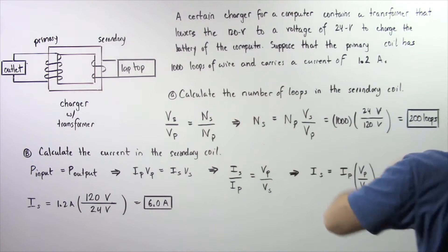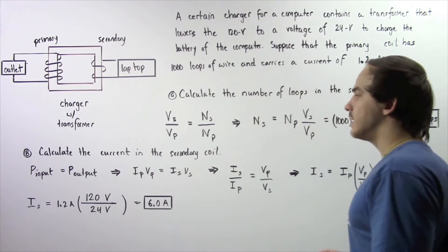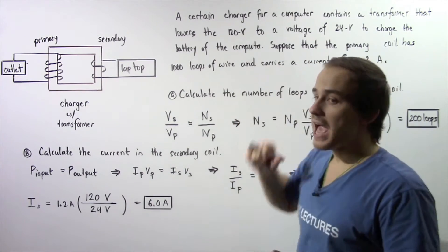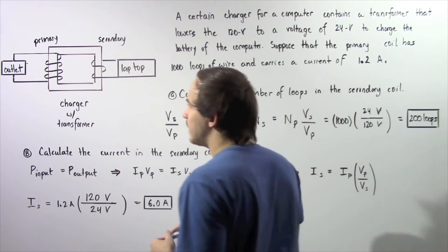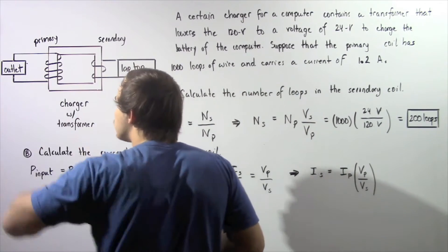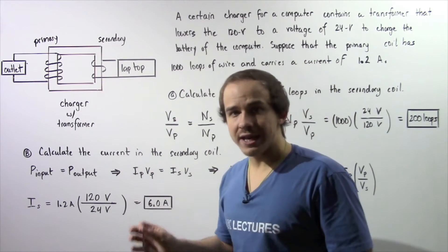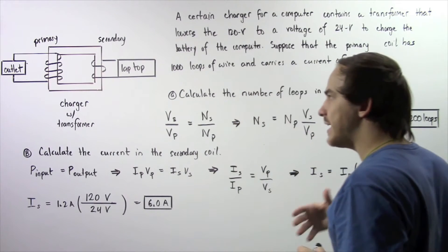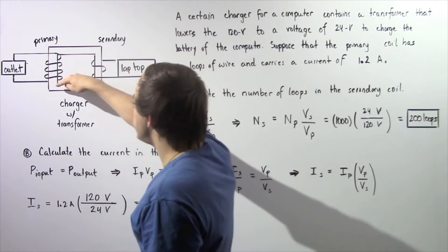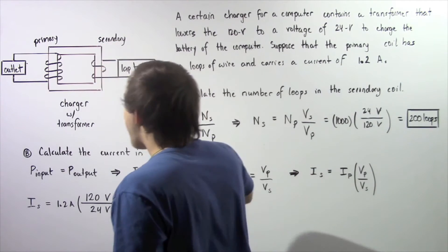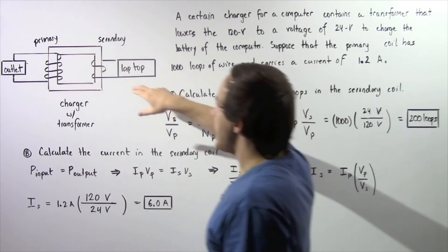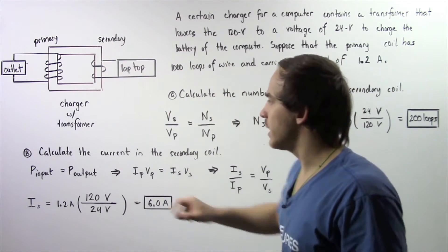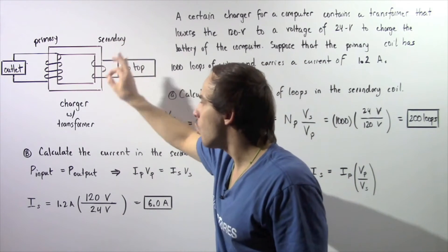In part A, calculate the number of loops in the secondary coil, and in part B, calculate the current in the secondary coil. Let's look at the following diagram that describes our example. Here we have our outlet — we plug our charger in and alternating current flows through the loops of the primary coil. That alternating current produces a changing magnetic field, which travels through the iron core and creates an alternating electric current in the secondary coil.